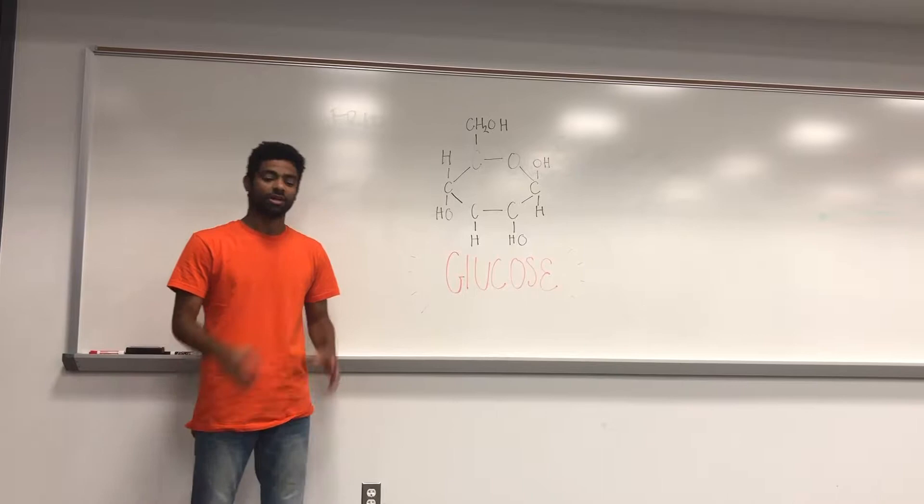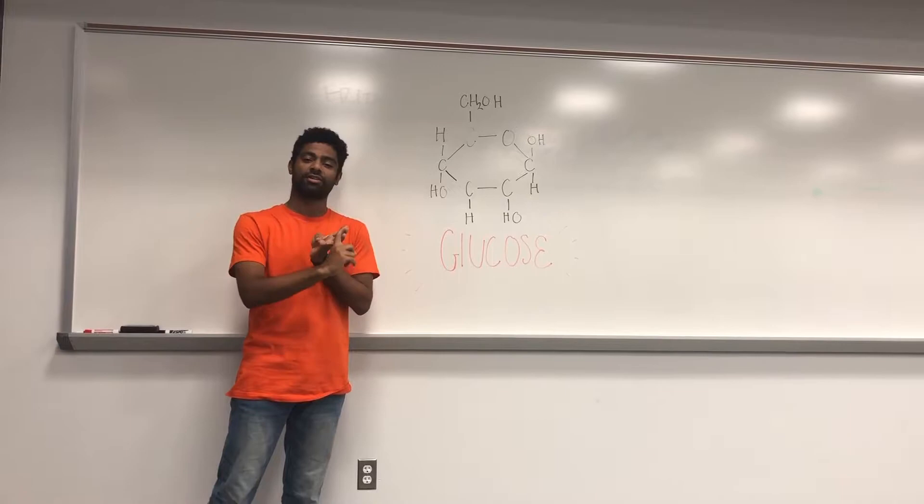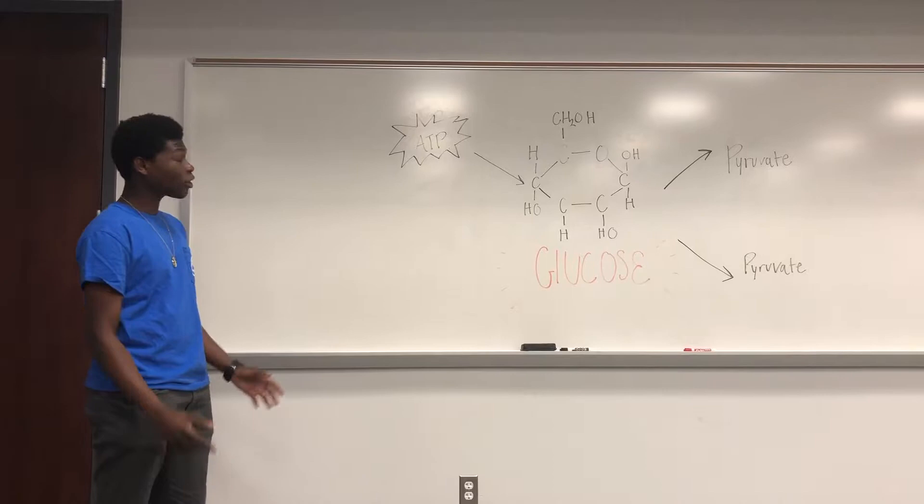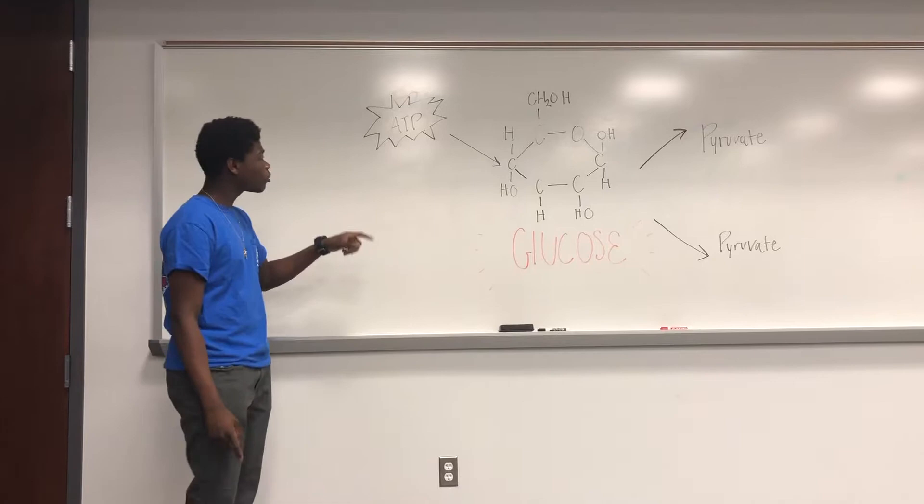Our bodies undergo multiple processes that extract the energy from glucose, which include glycolysis, the citric acid cycle, and oxidative phosphorylation. The first step is glycolysis. Glycolysis occurs in the cell cytosol, which is outside of any organelles. Energy is added to the glucose in the form of ATP, which then splits the molecule into two pyruvate molecules.